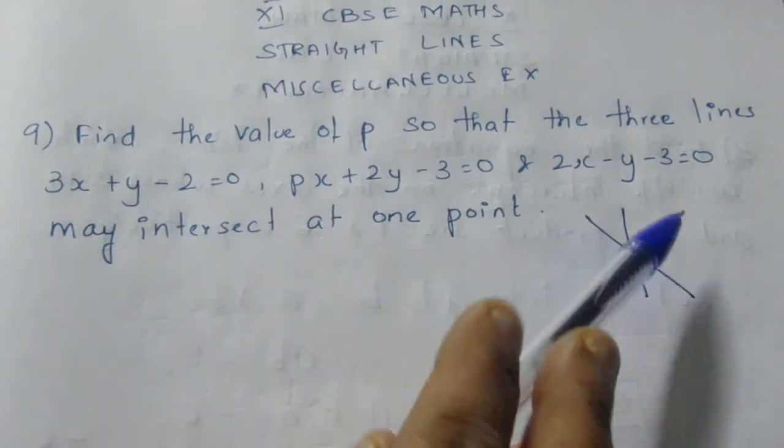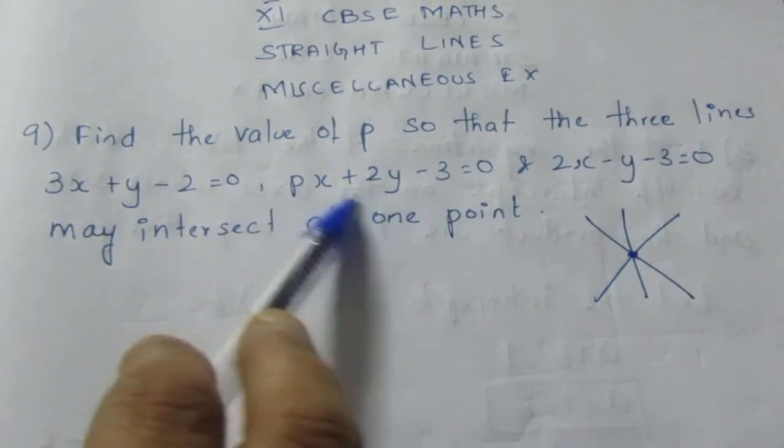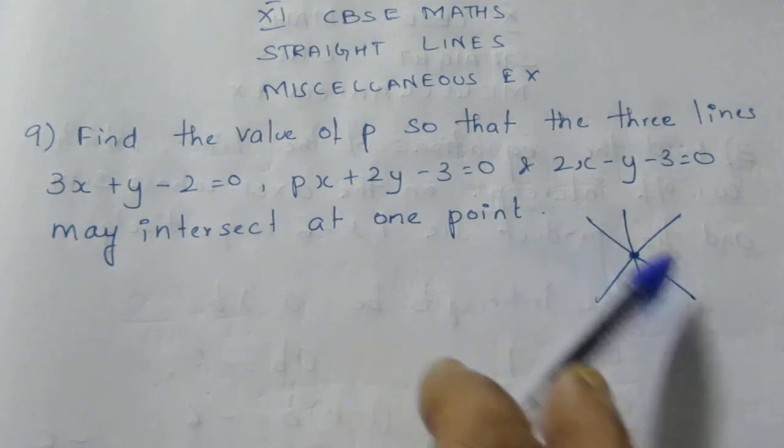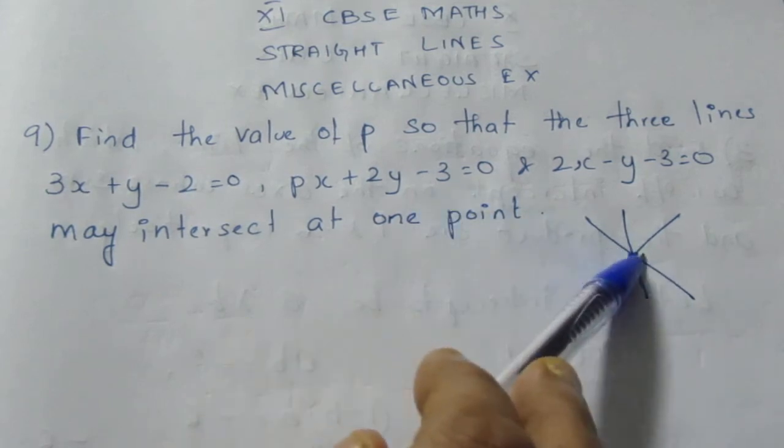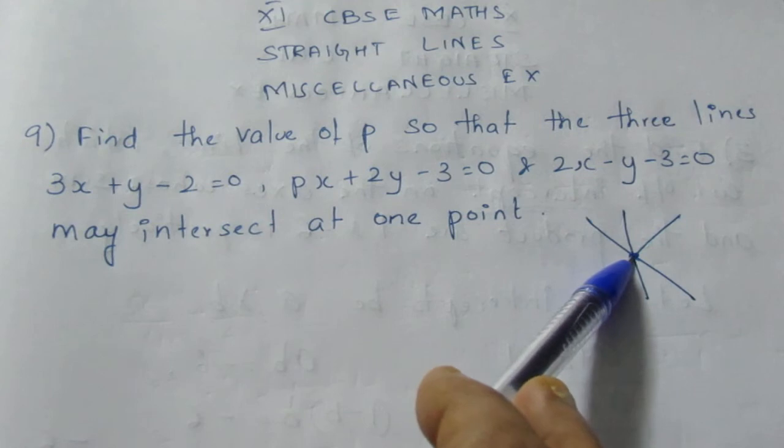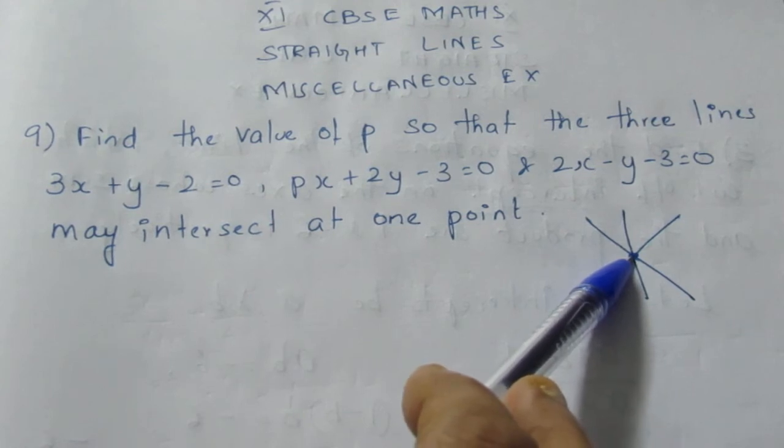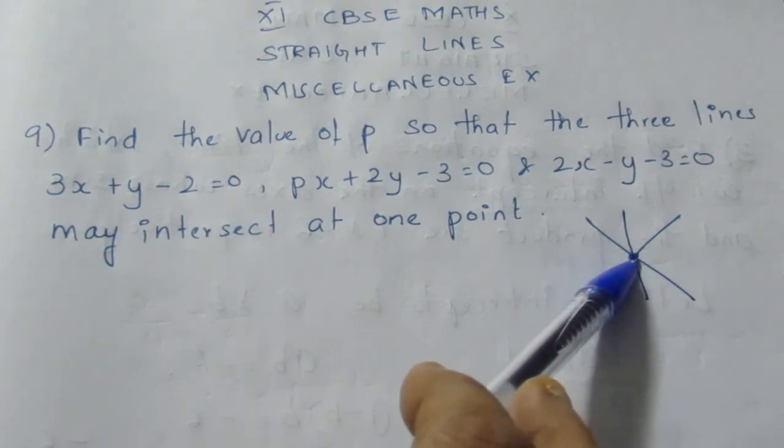If we take any two lines, we can find the point of intersection by the elimination method. So solving any two equations, we can find the point of intersection, that is, we can find the value of x and y at their meeting point.